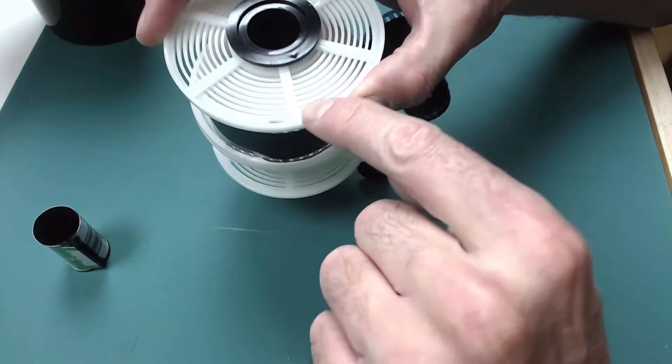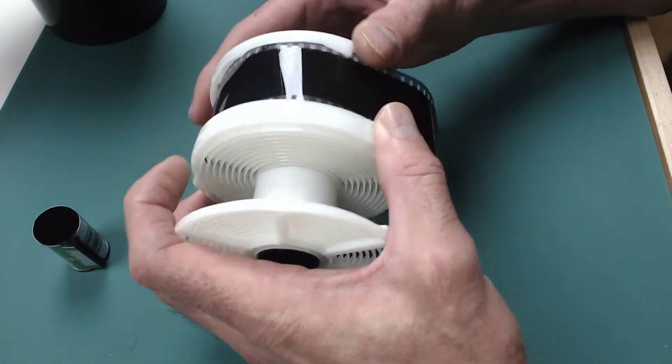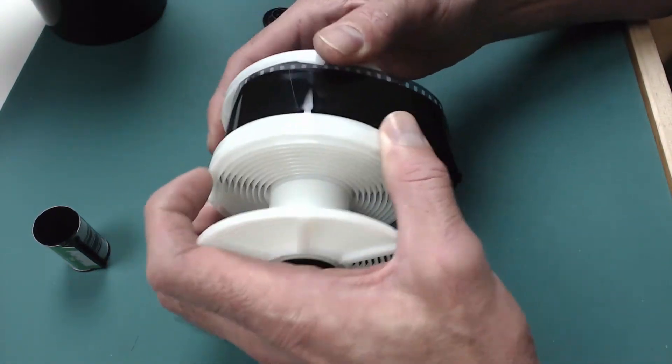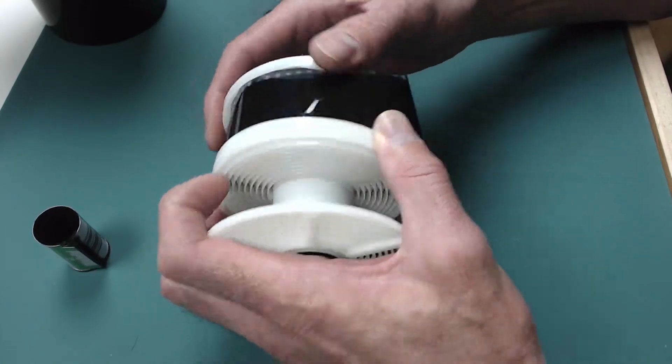Once you get past these ball bearings here and one on the other side, it will load automatically by twisting, like this, twisting and twisting until all of the film is onto the cassette.